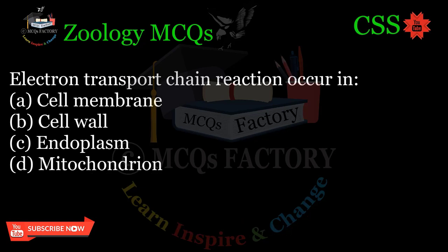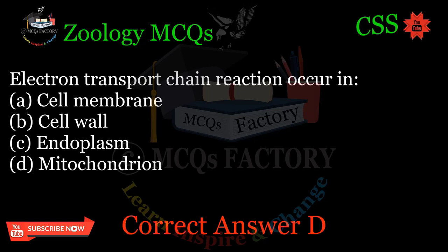Electron transport chain reactions occur in: A. Cell membrane, B. Cell wall, C. Endoplasm, D. Mitochondrion. Correct answer: D.